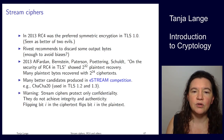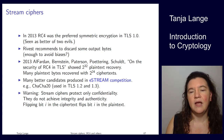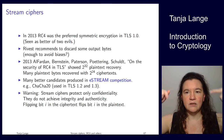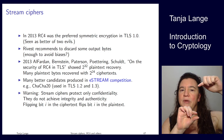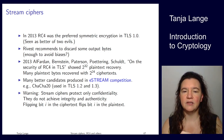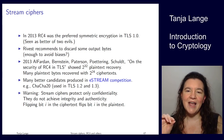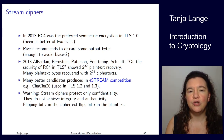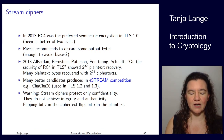As a warning: stream ciphers only protect confidentiality — Eve cannot read what's being sent, but they do not achieve integrity or authenticity. Because encryption is just XOR with the key stream, if Eve flips a bit in the ciphertext, she effectively flips that bit in the plaintext. If she knows the format — say it's a bank transfer amount — she can manipulate the value. So we always need to add something to a stream cipher to achieve authenticity, which is a topic for next time.